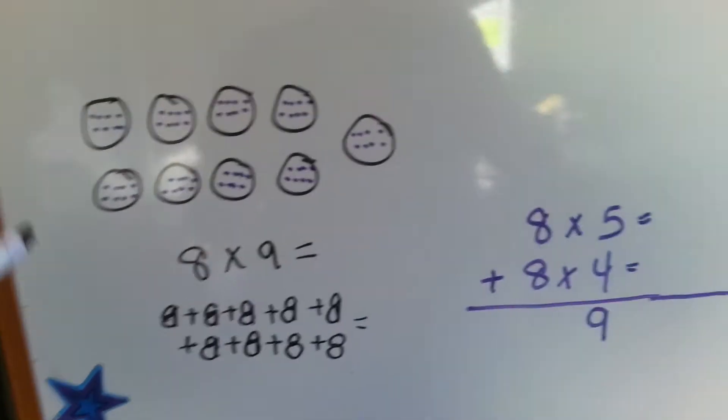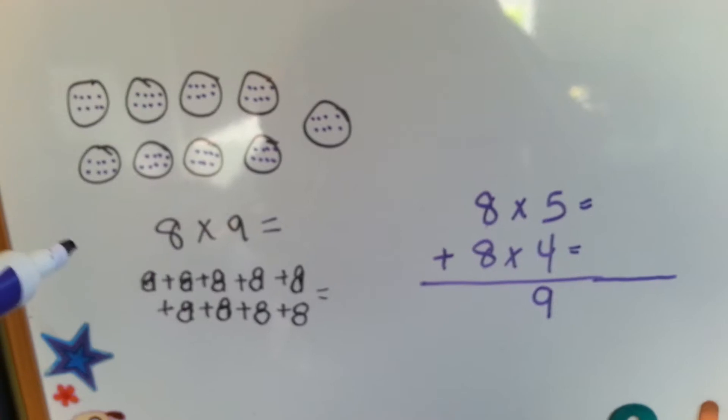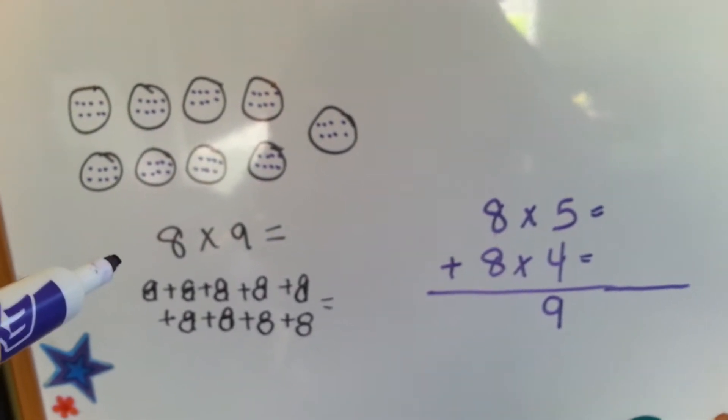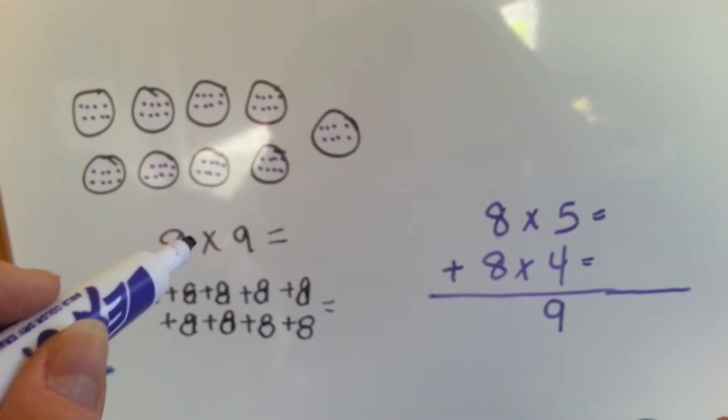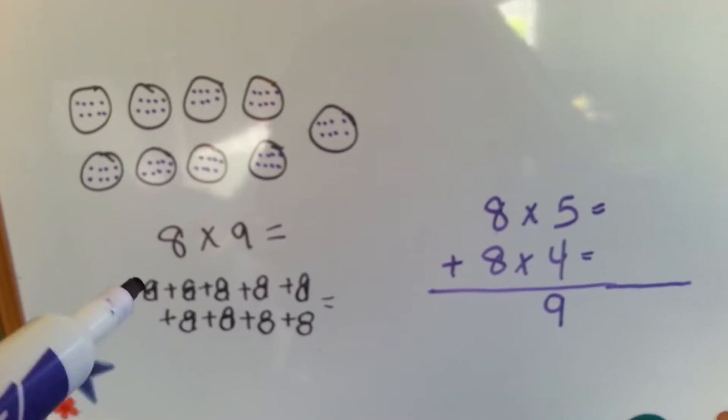So what happens if you have a really big number like this and you don't remember what the answer is? Like eight times nine. That means you have an eight nine times.